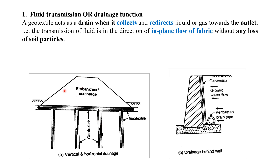Below the embankment, the geotextile has been inserted in the ground vertically. Whatever pore water is there in the ground will start moving in horizontal directions and come into the geotextile, then move vertically, and after that go in the horizontal direction. So the geotextile acts as a drain — it collects water horizontally and transports it in the vertical direction.